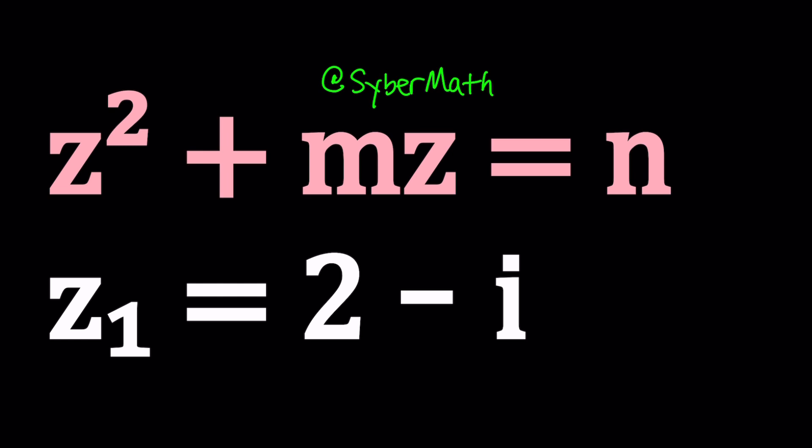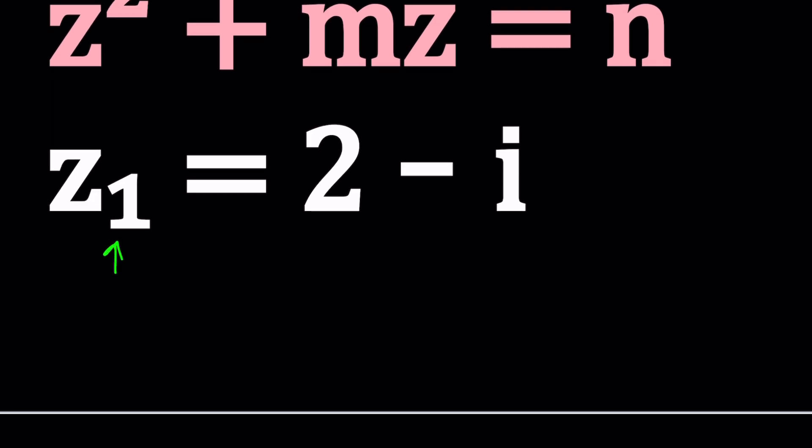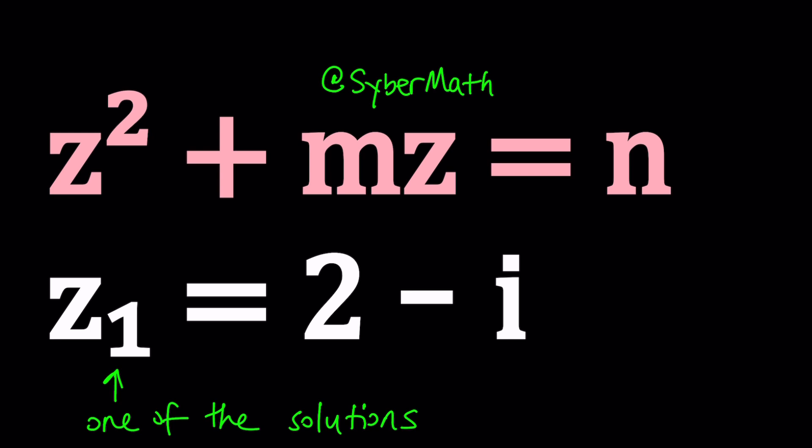Great, so we're given a quadratic equation, z squared plus mz equals n. Z is the variable, m and n are constants. And we are given that z sub 1 is equal to 2 minus i. It means one of the solutions to this equation, because this is quadratic and it's supposed to have two complex solutions. But there's also an additional piece of information: m and n are rational numbers. That's an important thing because if they are not, then it's a different story.